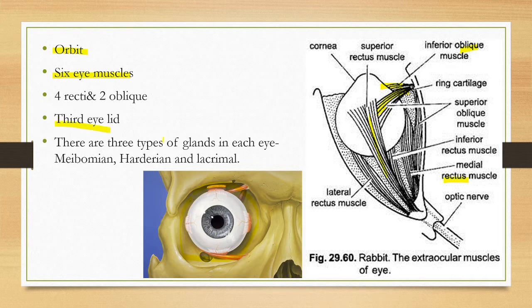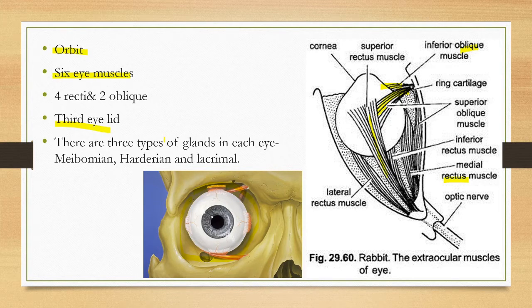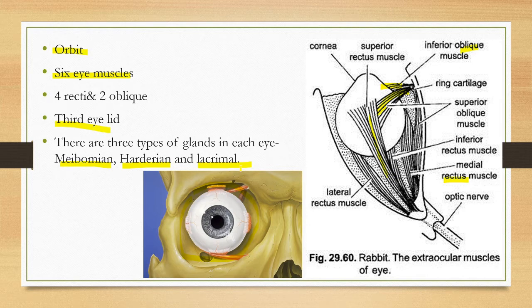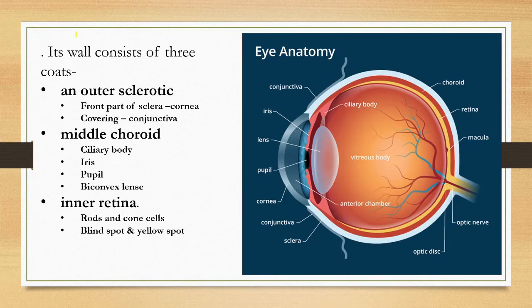There is a third eyelid called the nictitating membrane which helps in protection. In human it is degenerated. There are three types of glands in each eye: Meibomian gland, Harderian gland, and lacrimal gland. Meibomian gland and Harderian gland secretions keep the eye moist while the lacrimal gland secretion is salty and prevents infections and bacterial growth.